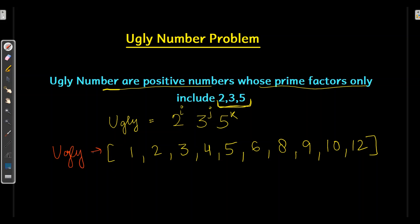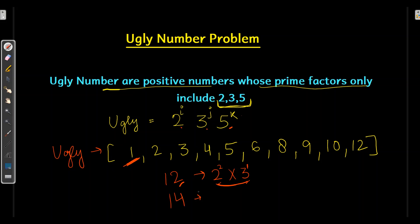And if we have to verify whether they are ugly numbers or not: 1 is an exception, which is a typical ugly number. Why I said this as an exception — because it is neither a multiple of 2, 3, nor 5. Now if I have to verify whether 12 is an ugly number, I will take out its factors: 2 squared into 3 to the power 1. So 12 is a multiple of 2 and 3. Now if I want to see whether 14 is an ugly number, let's take out its prime factors: 2 and 7. Here 2 is in the ugly set, but 7 is not a multiple of either 2, 3, or 5. So we can say 14 is not an ugly number.